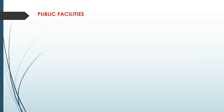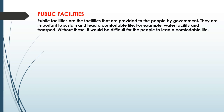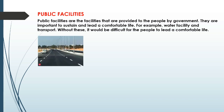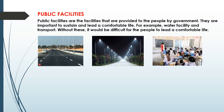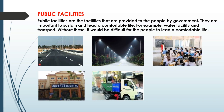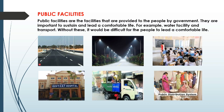Now let's come to the next topic: public facilities. Public facilities are the facilities provided to the people by the government. They are important to sustain and lead a comfortable life. Examples include water facilities, transport, roads, and street lights — without these it would be difficult for people to live or lead a comfortable life. Further examples are roads, street lights, government schools, government hospitals, sanitary systems, and the public distribution system.